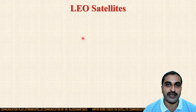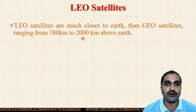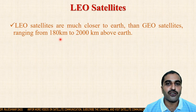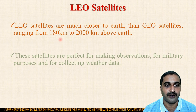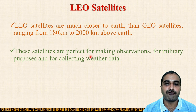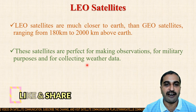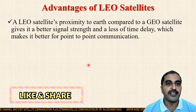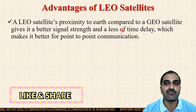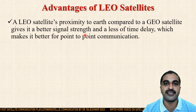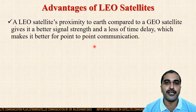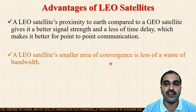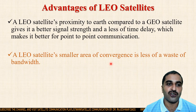First we will see LEO satellites. LEO stands for low earth orbit satellites. LEO satellites are much closer to the earth than the GEO satellites, ranging from 180 km to 2000 km above the earth's surface. These satellites are perfect for making observations for military purposes and for collecting weather data. A LEO satellite's proximity to earth gives it better signal strength and less time delay, which makes it better for point-to-point communication. A LEO satellite's smaller area of coverage is less wasteful of bandwidth.